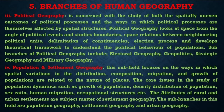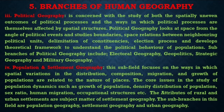The third sub-branch is political geography. It is concerned with the study of both the spatially uneven outcomes of political processes and the ways in which political processes are themselves affected by spatial structures. Political geography looks at space from the angle of political evenness, studies boundaries, and space relations between neighboring political units. It covers delimitation of constituencies, election processes, and develops theoretical frameworks to understand the political behavior of the population. Sub-branches of political geography include electoral geography, geopolitics, strategic geography, and military geography.